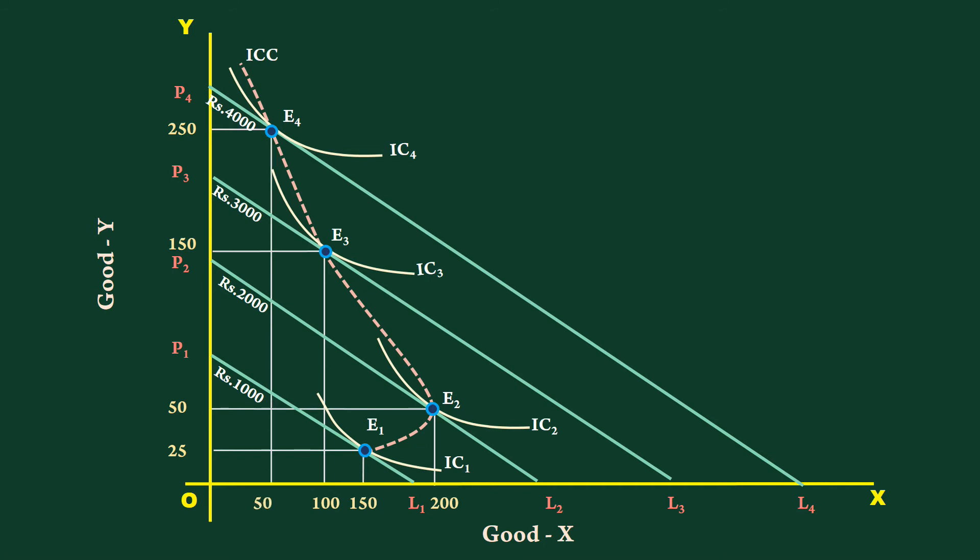Beyond income level two thousand, there is negative relation between income and demand for good X. As the consumer reduces his purchase with every increase in income beyond two thousand, good X is inferior in this range.